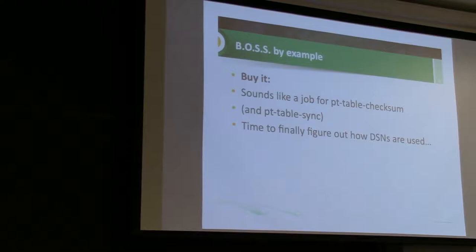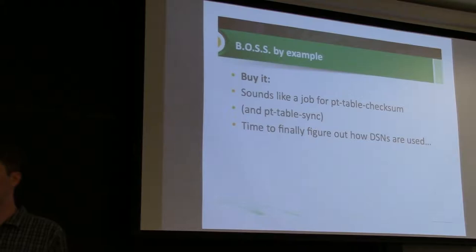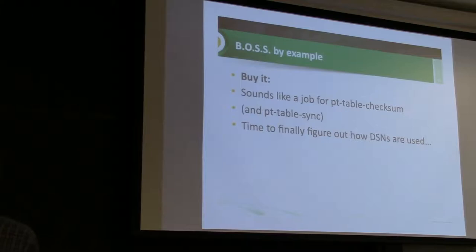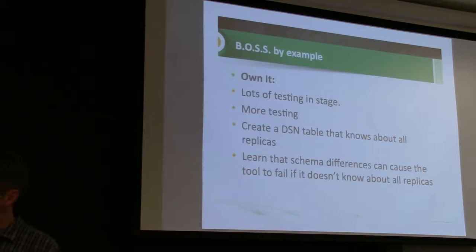Those are tools I knew about, and I looked into them. Before I checksummed all my data, since I knew the purge was coming up, I decided to wait until the purge was done, then checksum it — because I didn't want to fix a bunch of little inconsistencies in data I was just going to delete anyway. I knew what the tools were but didn't know exactly how they worked. Now it was time to finally figure out how DSNs are used. DSNs — Database Service Names — are how pt-table-checksum, when run on the master, knows who its slave databases are. There are a few different ways to do it, but DSN seemed like the way for me.